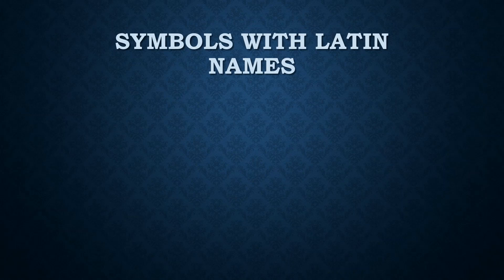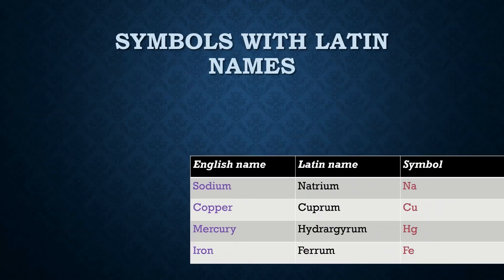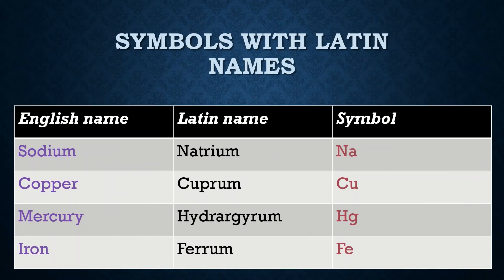We will also learn about symbols derived from the Latin names of elements. Examples are sodium, from its Latin name natrium, and copper, from its Latin name cuprum.